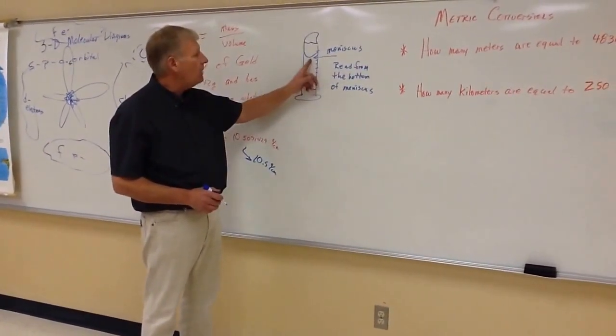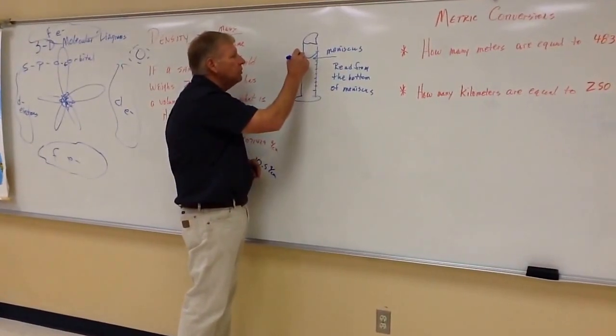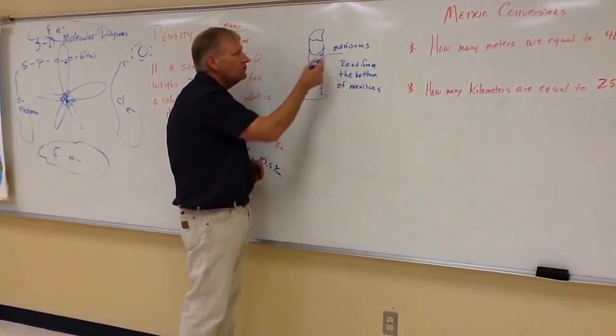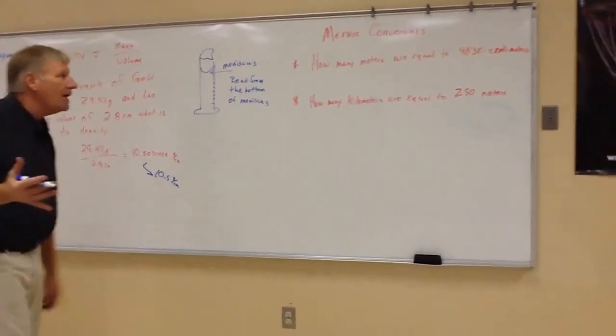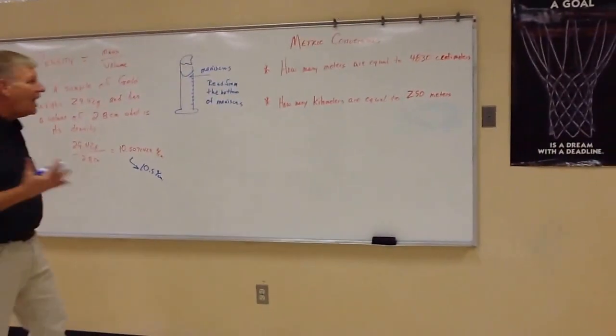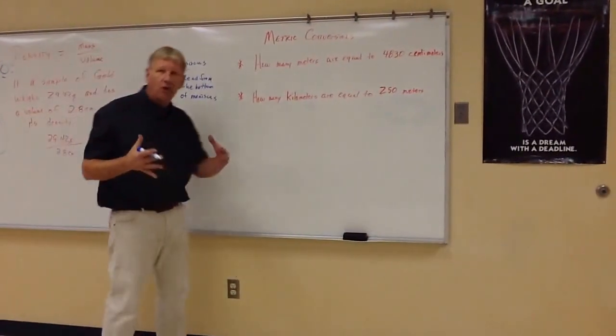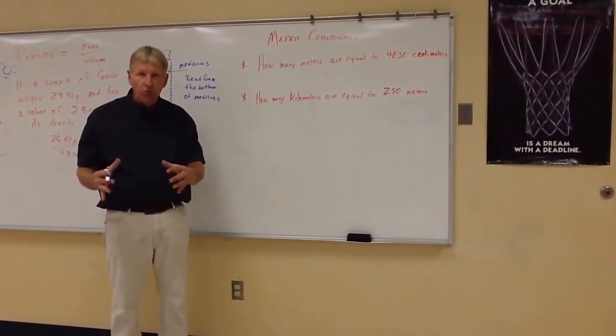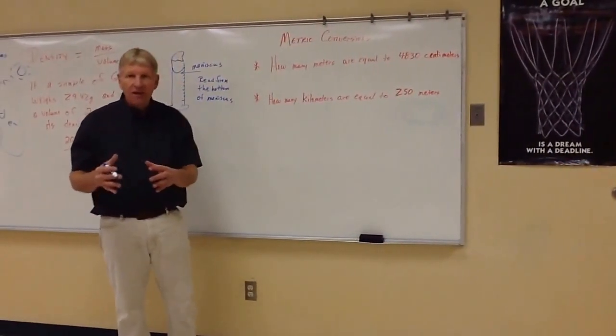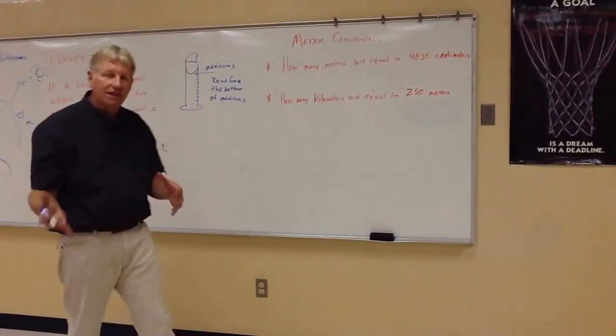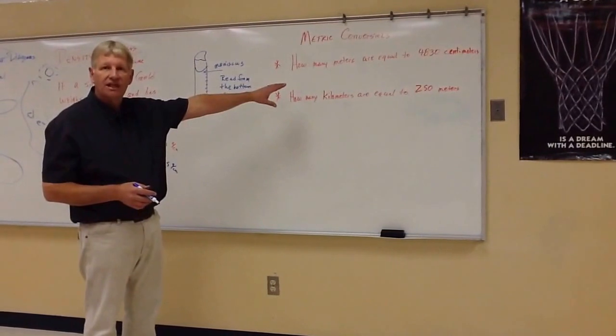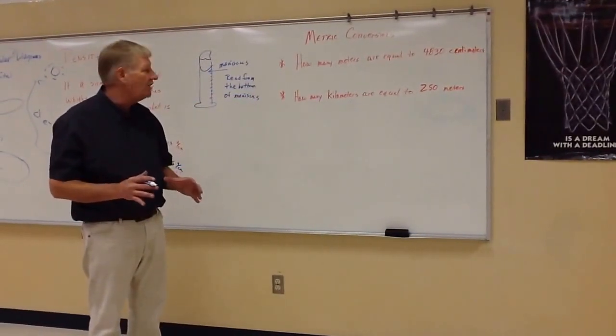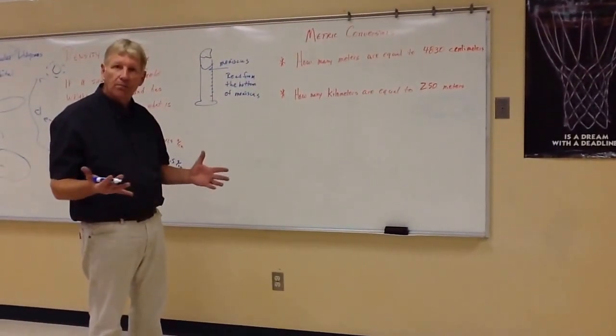You always read it from the bottom because remember the top, the top is really just pulled up to the top of the glass. So that's the meniscus. All right. Now, the last thing we're going to deal with in this chapter is metric conversion. And I love this because, once again, I was talking about the old English conversion where we have so many ounces in a quart, so many quarts in a gallon, that type of thing. Metric conversion is all based on base 10. So we just simply move our decimal place. So here's a couple of examples.